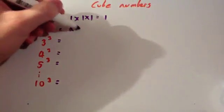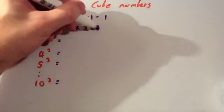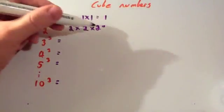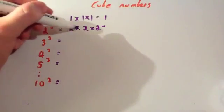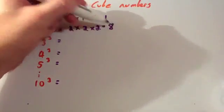2 cubed, that's 2 times 2 times 2. Now don't make the mistake of writing 6 here. 2 times 2, 2 times 2 is 4, times 2 is 8.